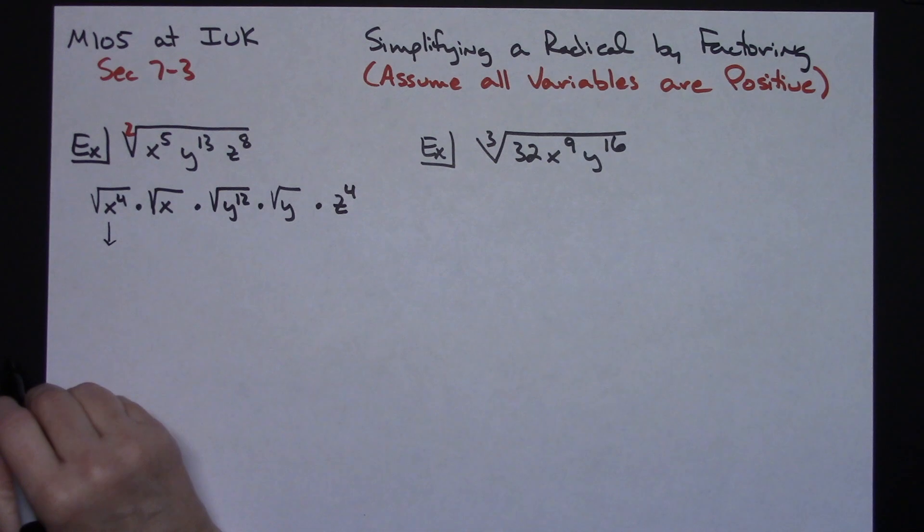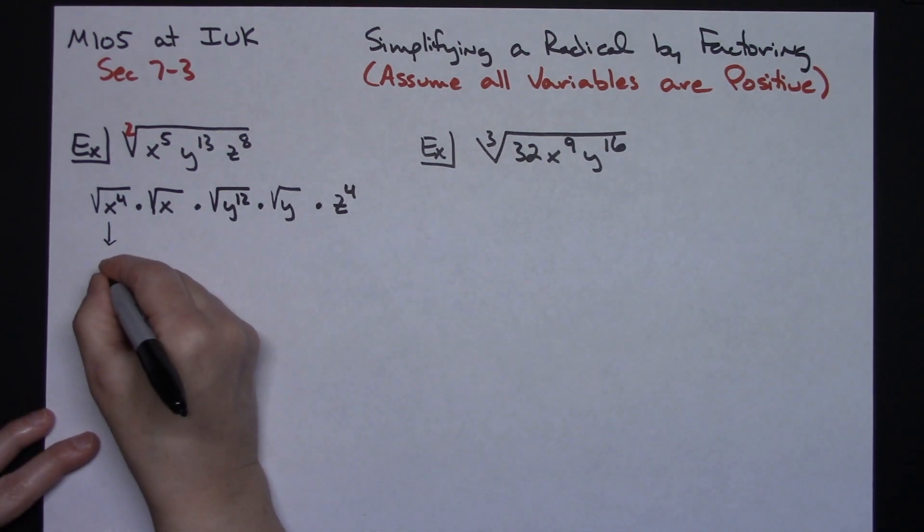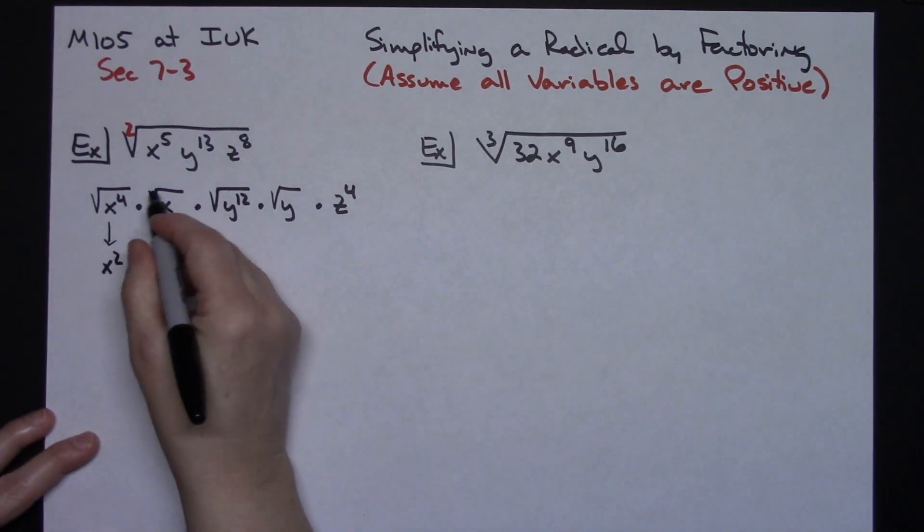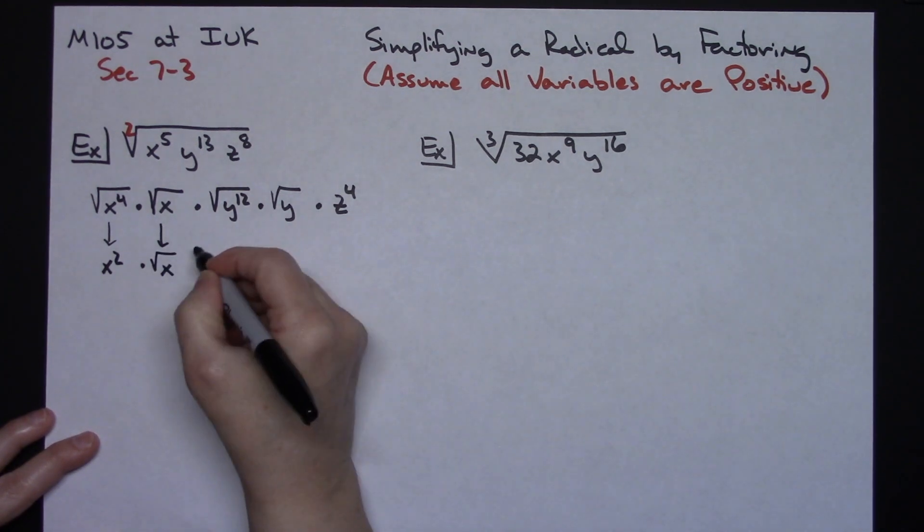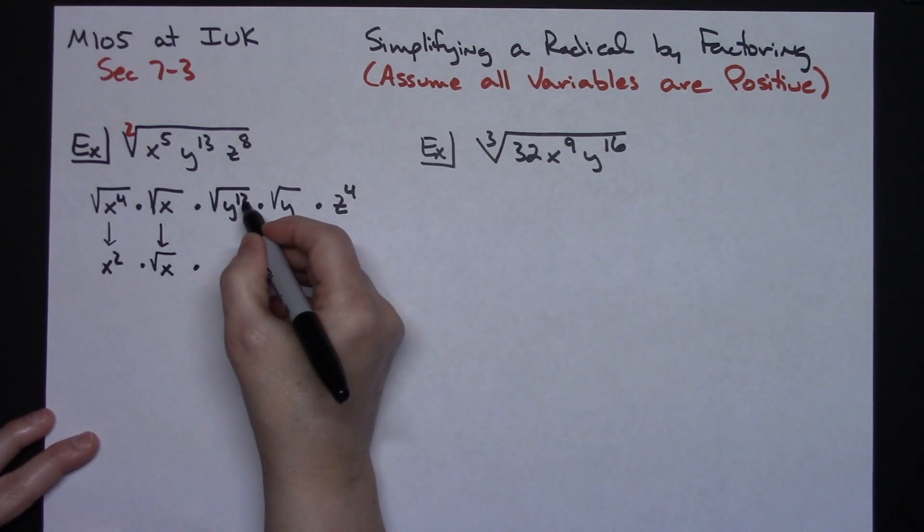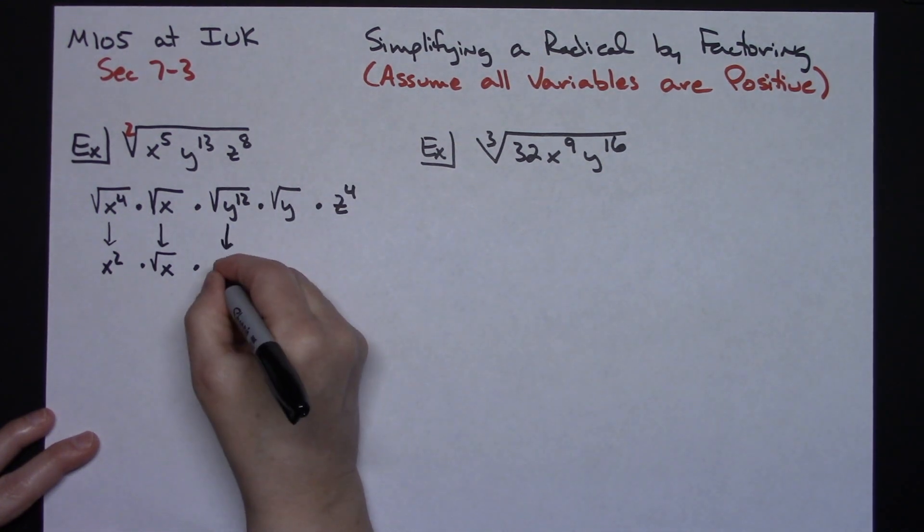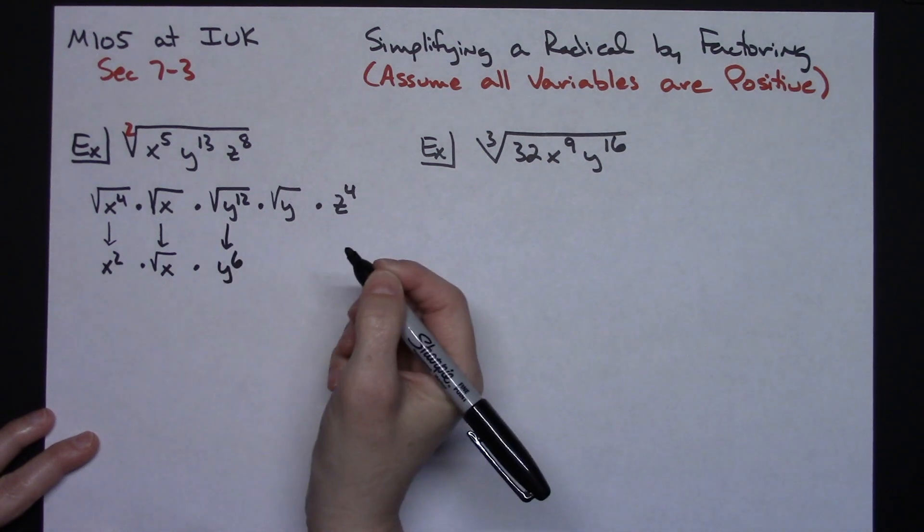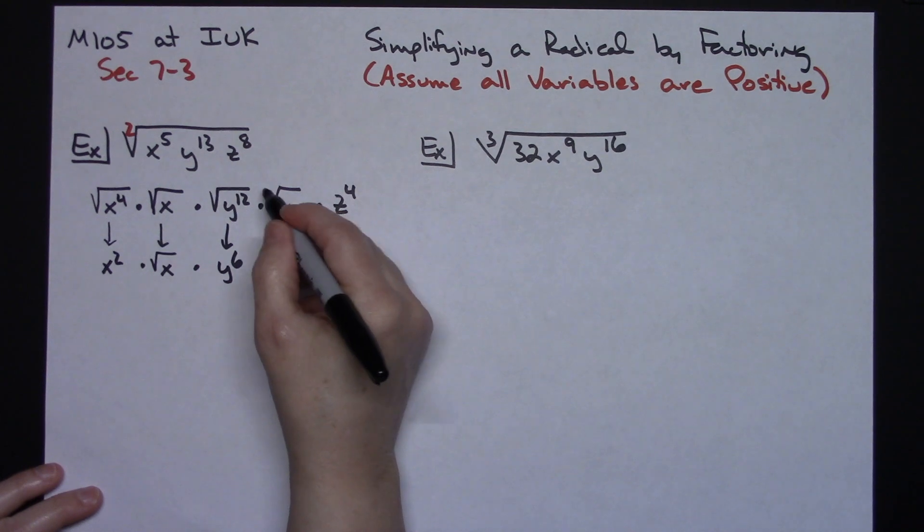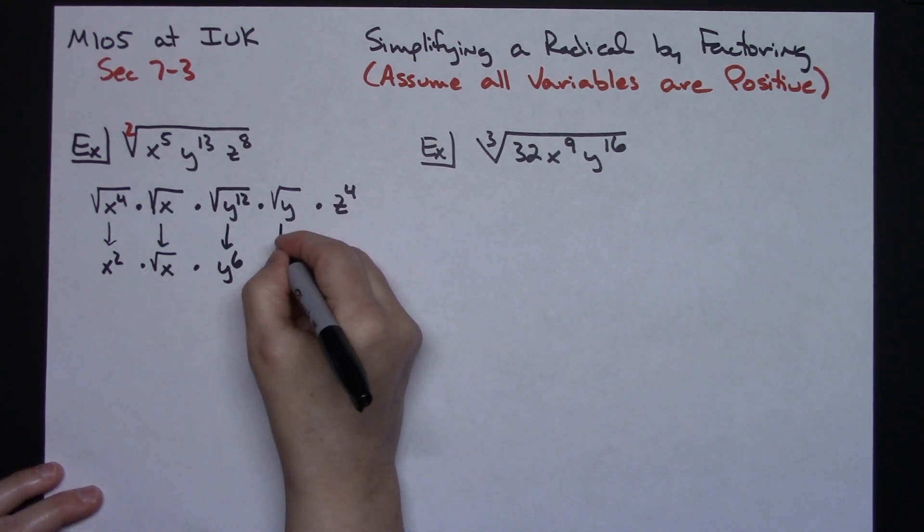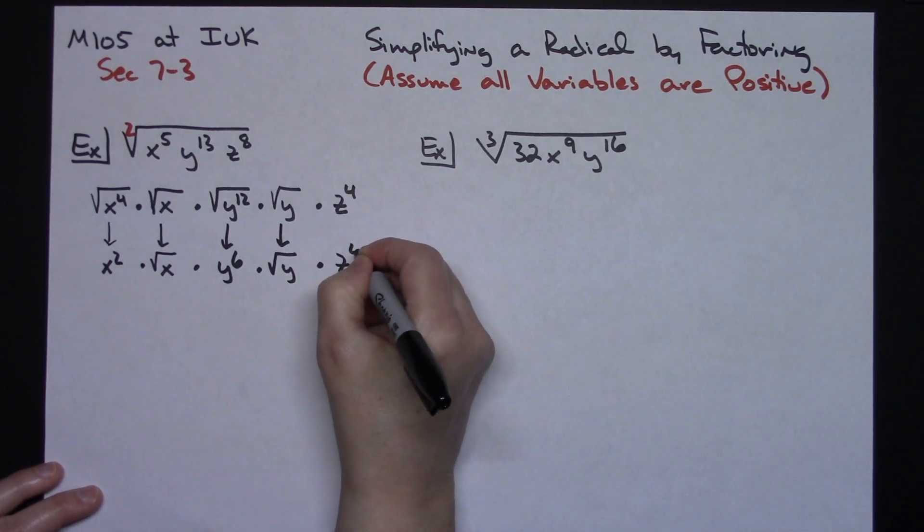Now let's go through the next line. This one we know is a perfect square. So 4 divided by that 2 gives me an x squared. I took the square root, so the radical goes away. I cannot do anything with this one, so that one stays square root of x. Now this one, 12 divided by the 2, I can. 12 divided by 2 is 6, so this is a perfect square root. I'm going to have a y to the 6th. No radical bars on that one because I took the square root. This one right here, square root of y, I cannot simplify, so it's going to stay a square root of y, and I've already taken care of this one. It's a z to the 4th.